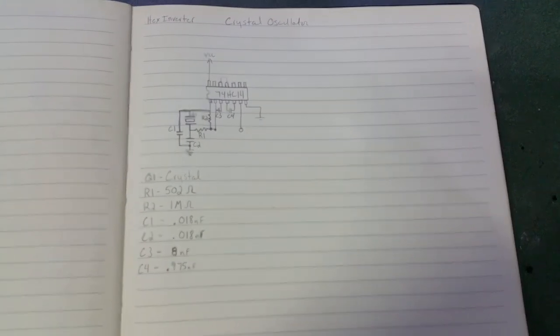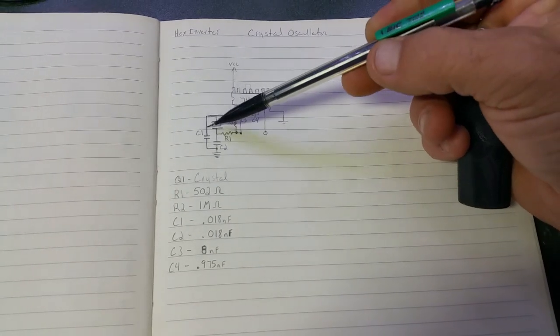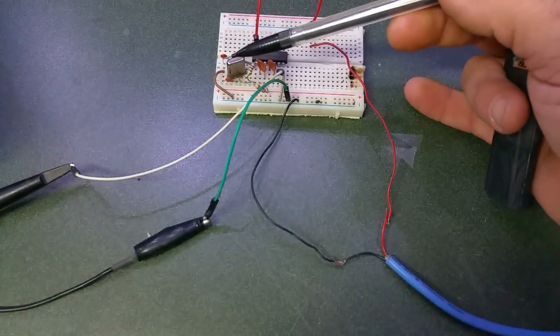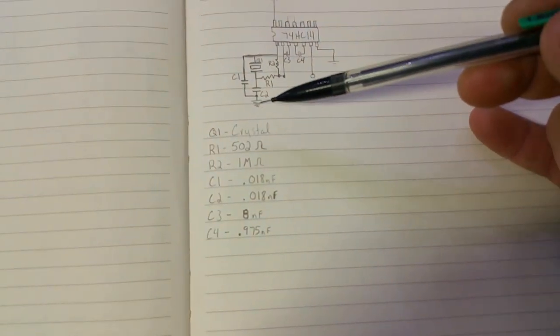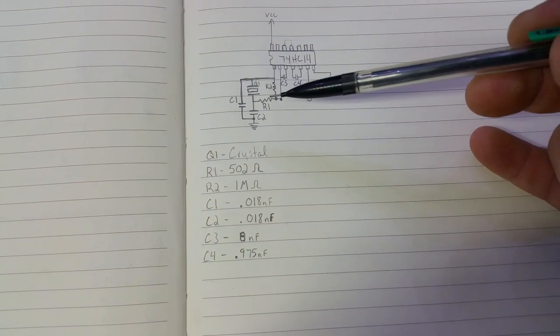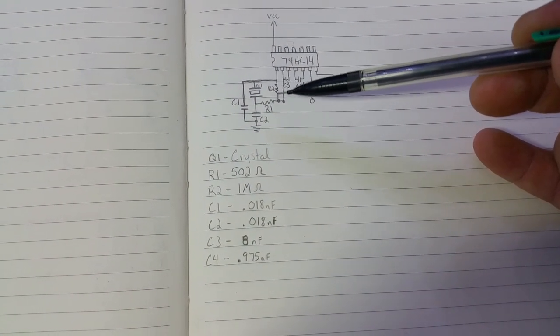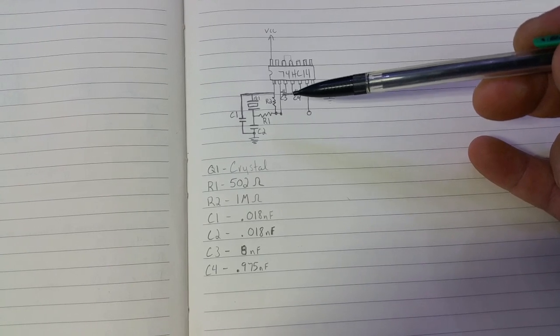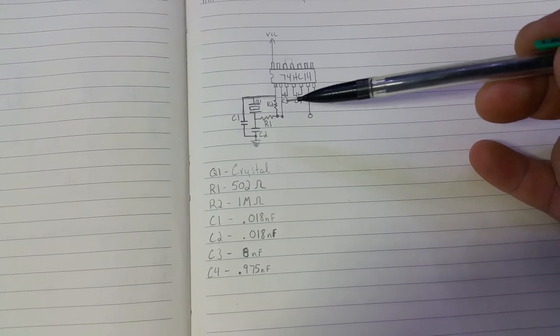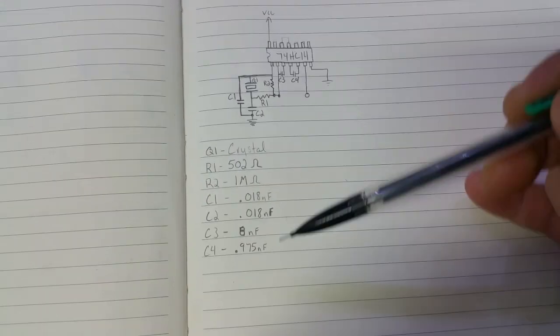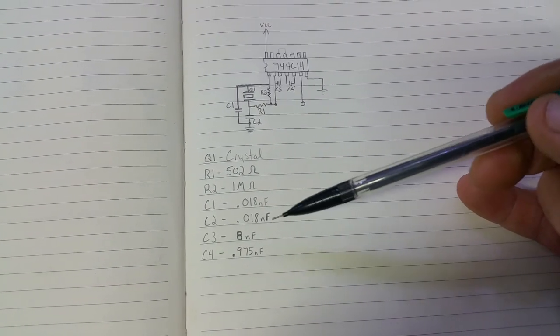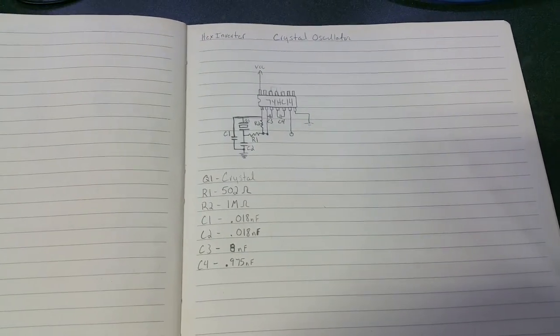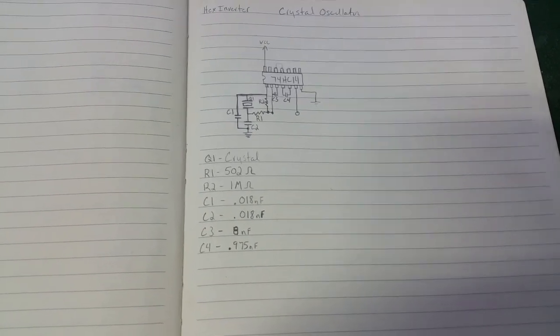You can pause that if you need. Capacitor 1 and 2, they're the same. Those are the ones that tie from the ground like it shows on here. There's a ground, there's a crystal, there's two resistors—the one between pin 1 and 2—and capacitors 3 and 4. Those sizes are right there. This is what my meter measured. Those are the cheaper capacitors you can buy, something I've had for a while. I actually made this a long time ago.